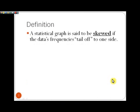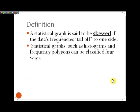Let's start out with a definition of skewness. A statistical graph is said to be skewed if the data frequencies tail off to one side. We can apply this notion to histograms, to frequency polygons, and also to box plots as well.